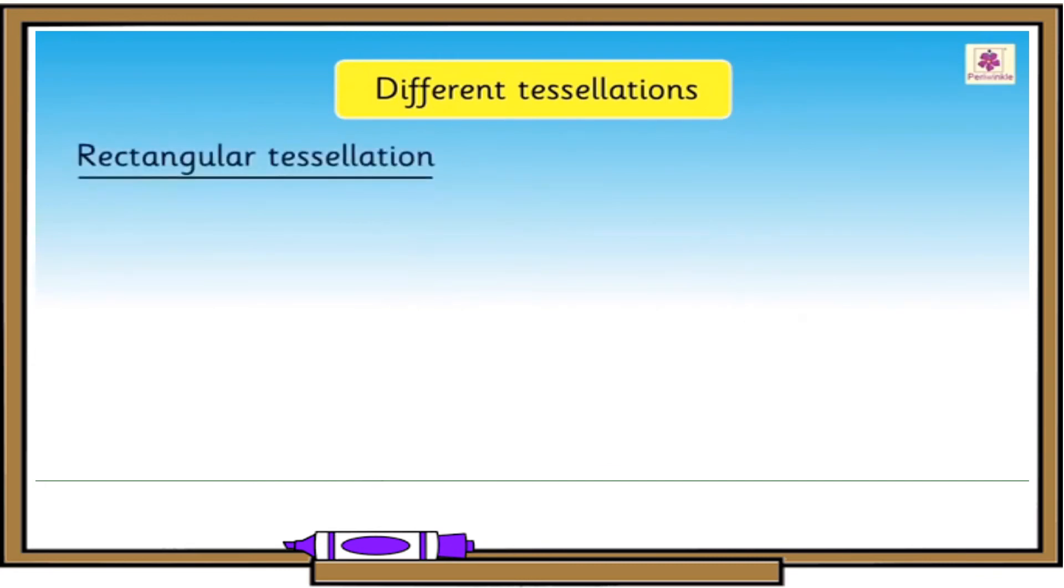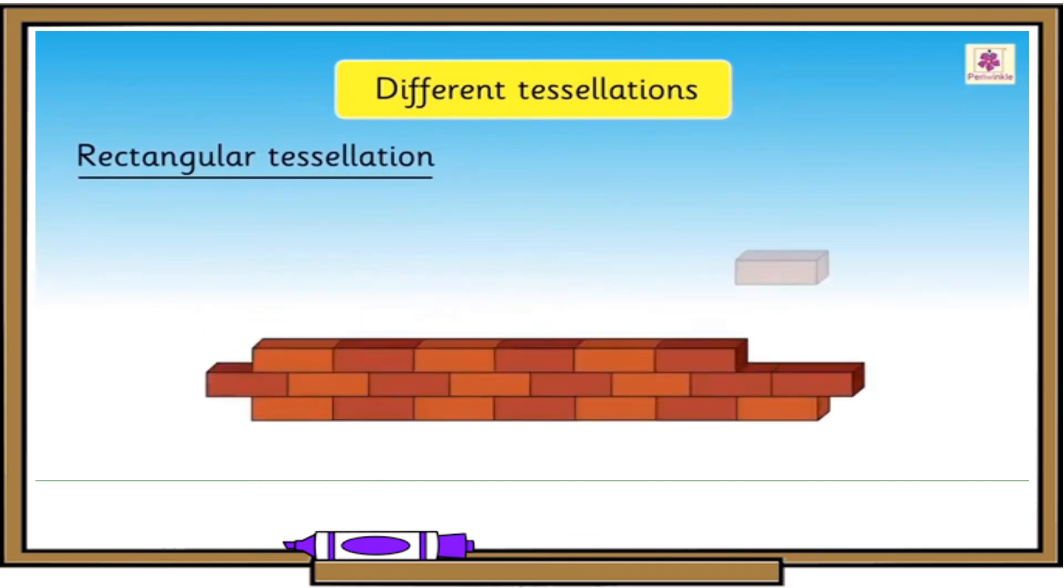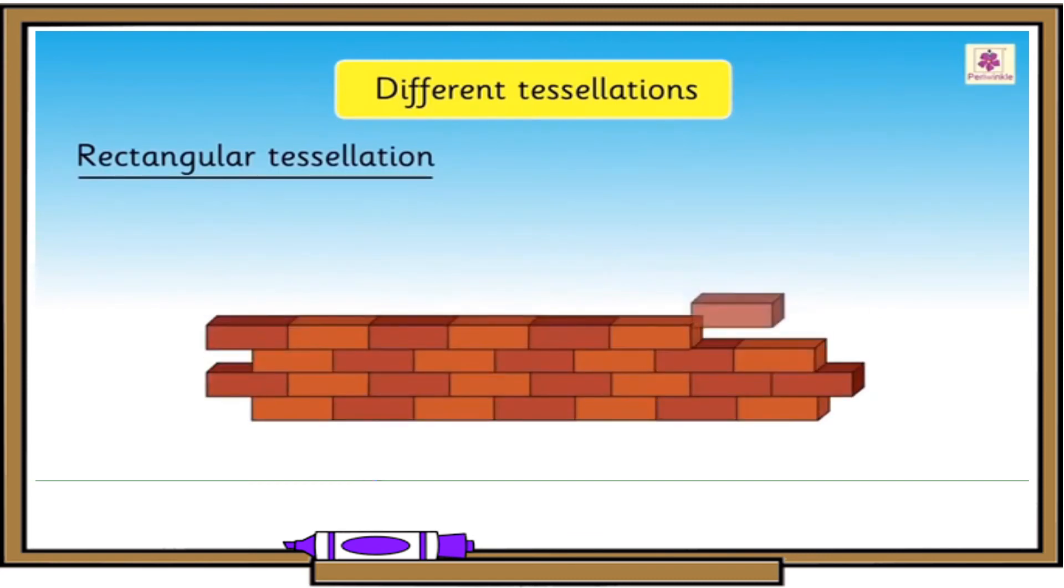Rectangular tessellation. The pattern of bricks on a wall is a tessellation made of rectangles.